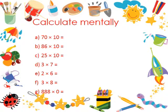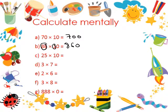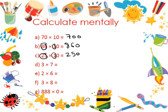We have in this slide to calculate mentally the following multiplications. 70 times 10 is equal to 700. 86 times 10. Why? We have first to multiply 86 by 1, which is 86, then put 0 to the right. 25 times 10: we multiply 25 by 1, which is 25, then put 0 to the right.